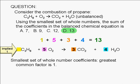We know that what we have here is the smallest set of whole number coefficients, because the greatest common factor of 1, 5, 3, and 4 is 1. It's not possible to divide all of them by the same number to get a set of smaller whole numbers.